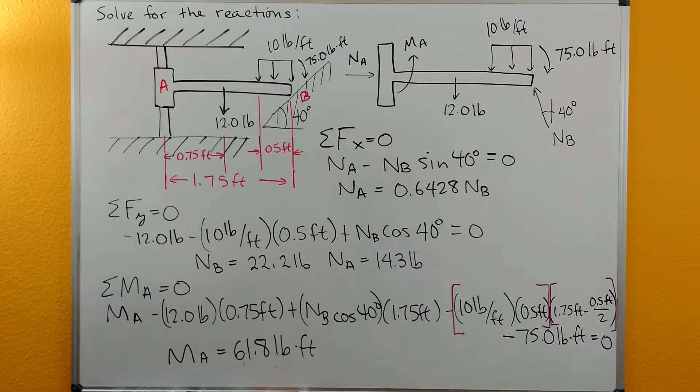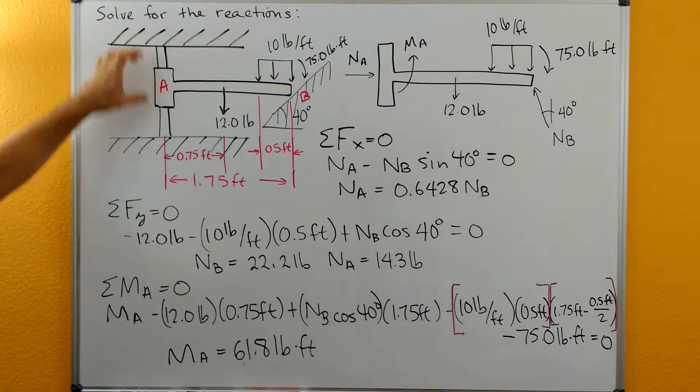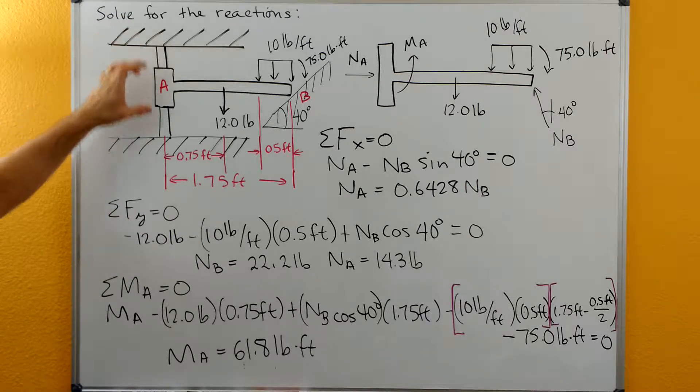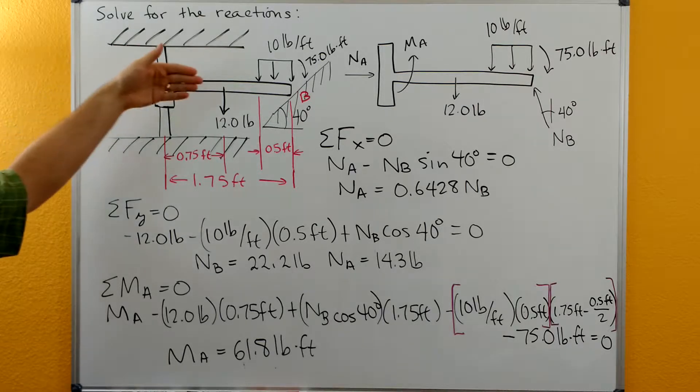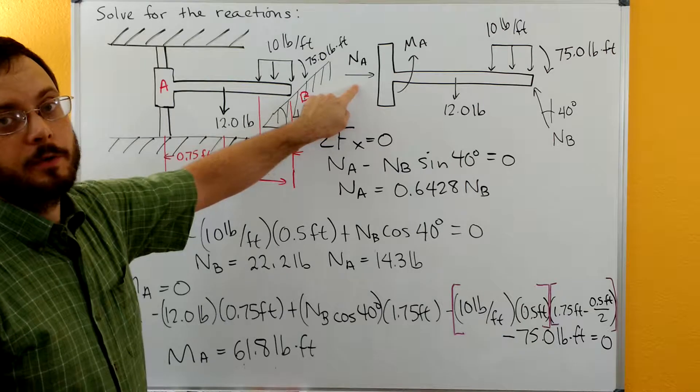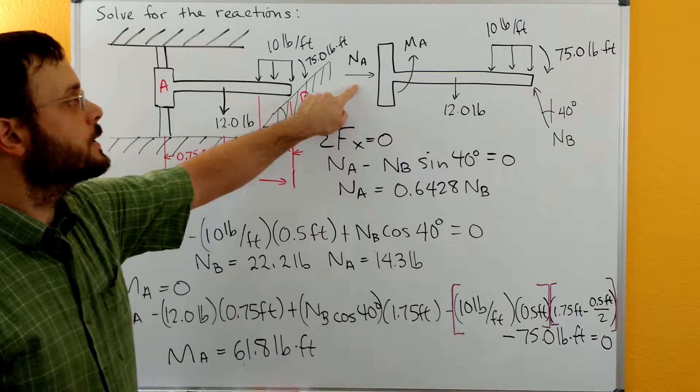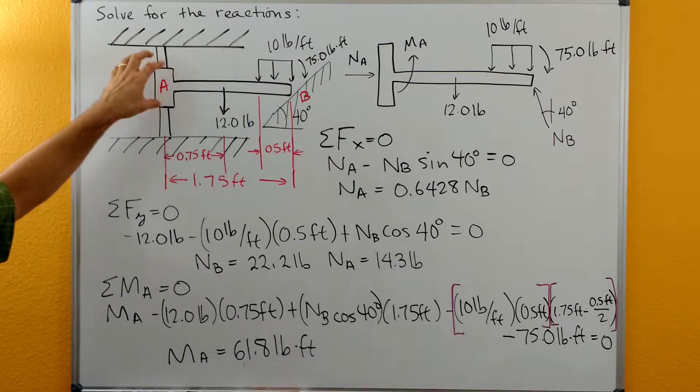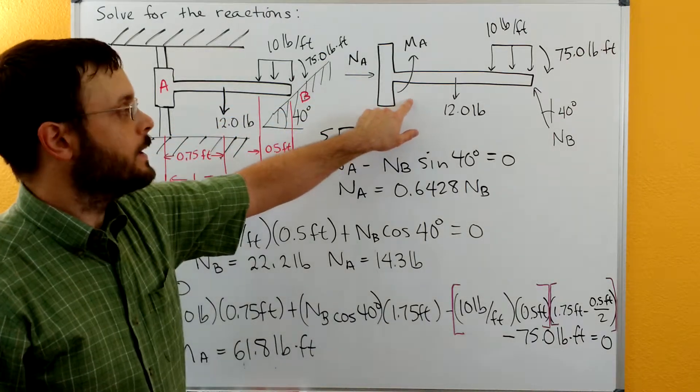Drawing the free body diagram: because this can slide up and down on the beam there's no Y component to the reaction, but this would resist both translation in the X, so we have a normal force here going in the X direction, and also rotation around point A, so we have a moment at A.